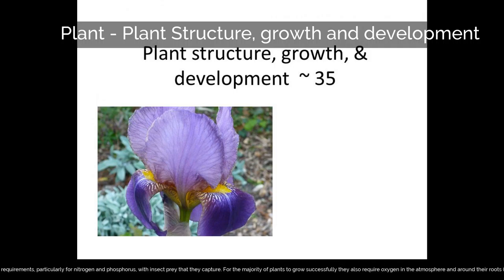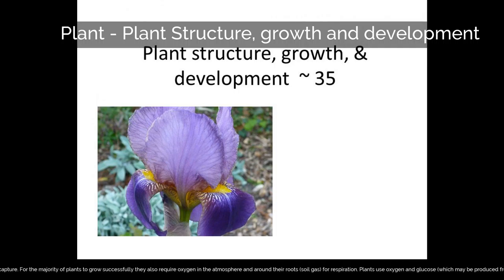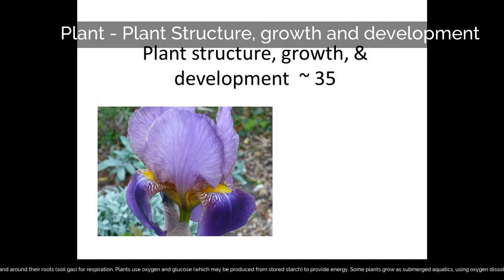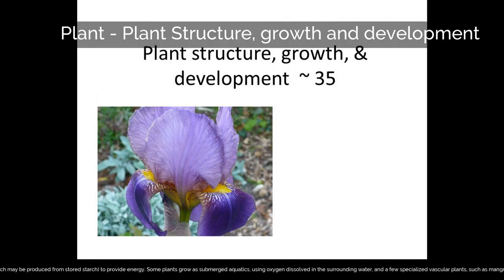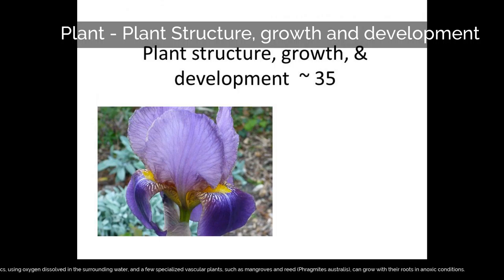For the majority of plants to grow successfully they also require oxygen in the atmosphere and around their roots, in the soil gas, for respiration. Plants use oxygen and glucose, which may be produced from stored starch, to provide energy. Some plants grow as submerged aquatics, using oxygen dissolved in the surrounding water, and a few specialized vascular plants, such as mangroves and reed (Phragmites australis), can grow with their roots in anoxic conditions.